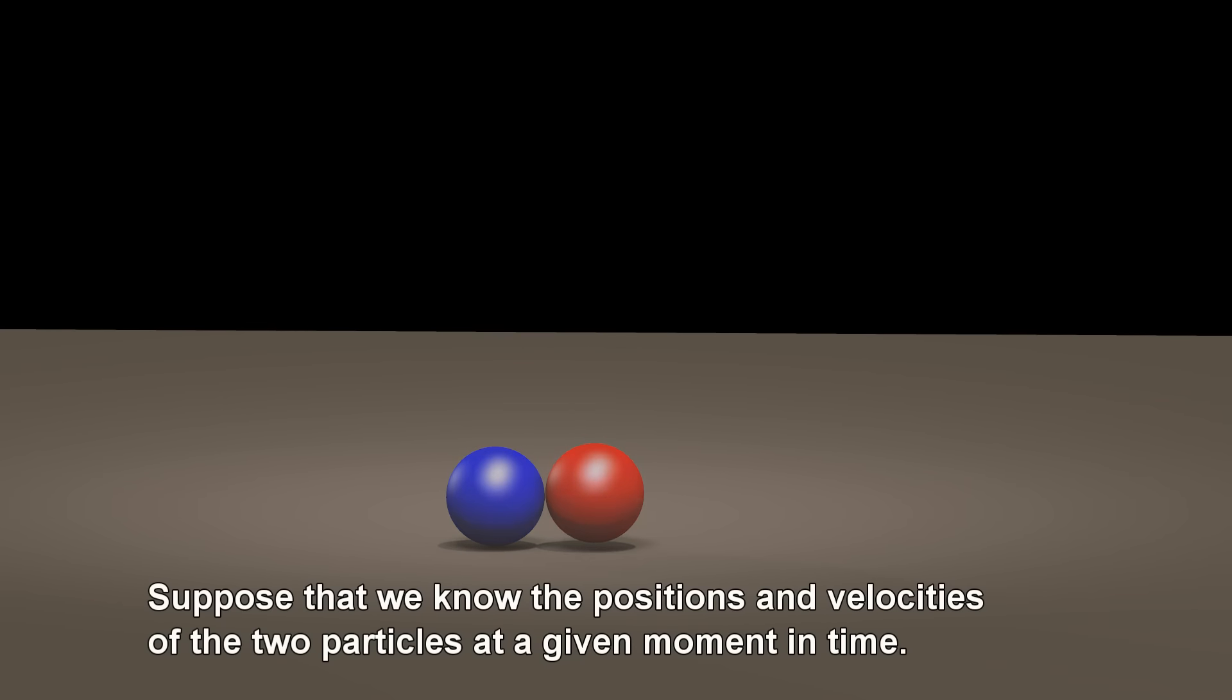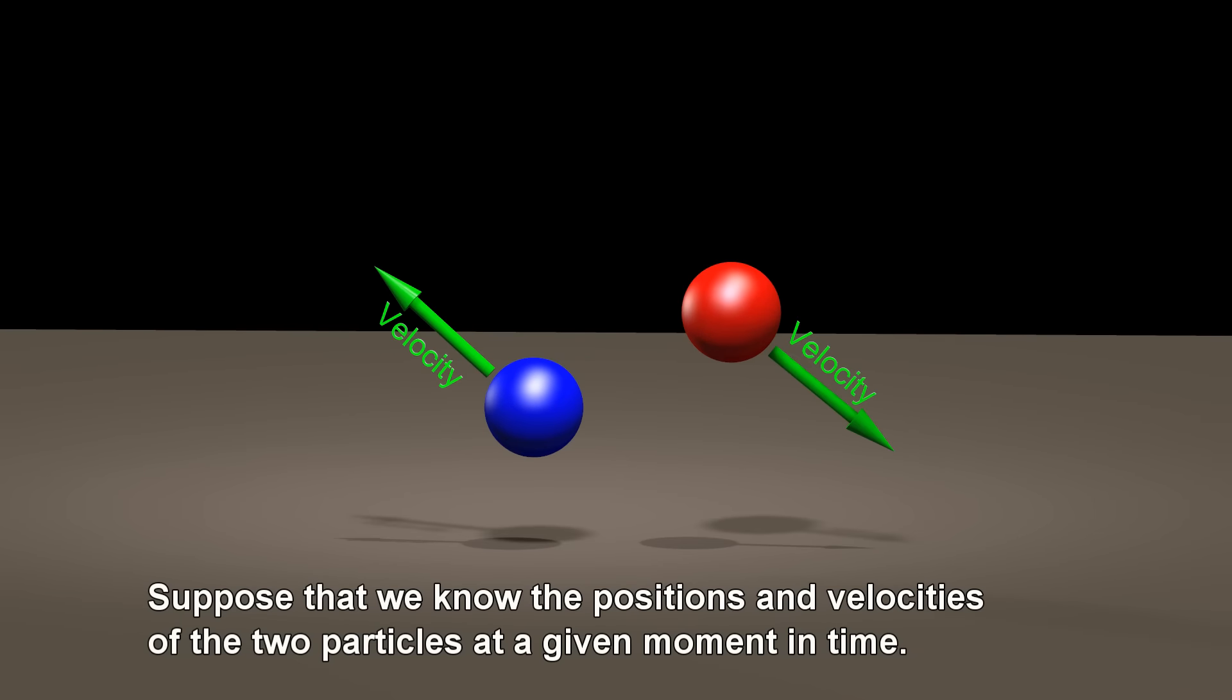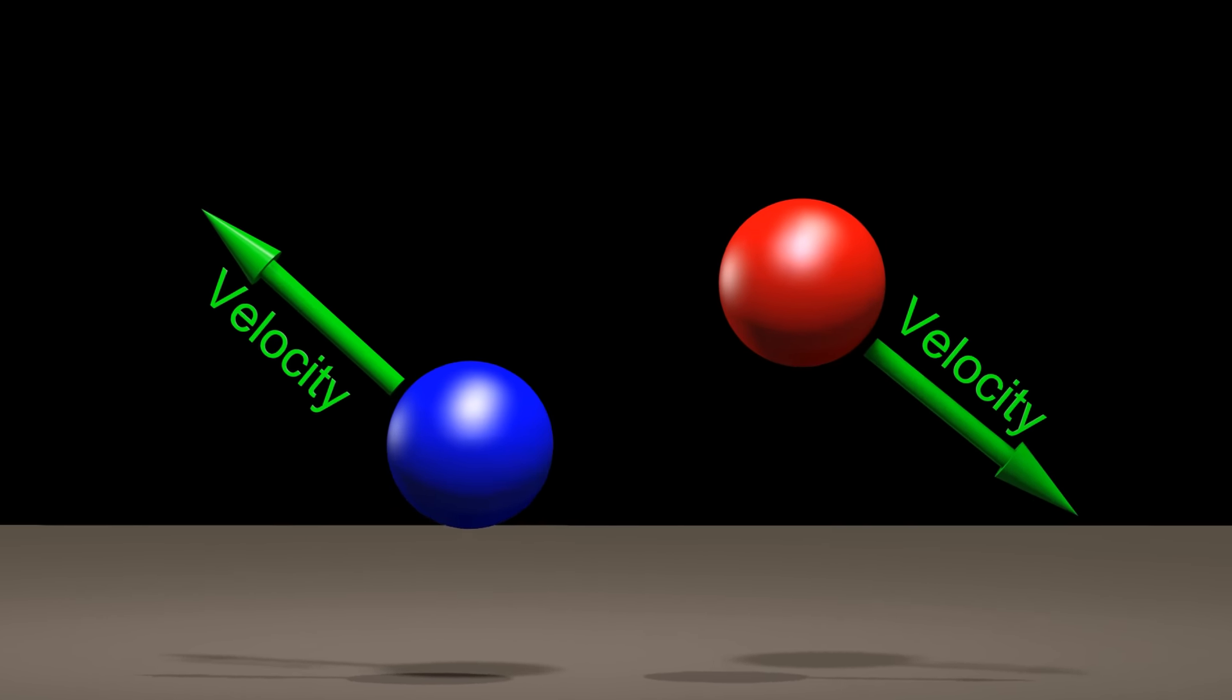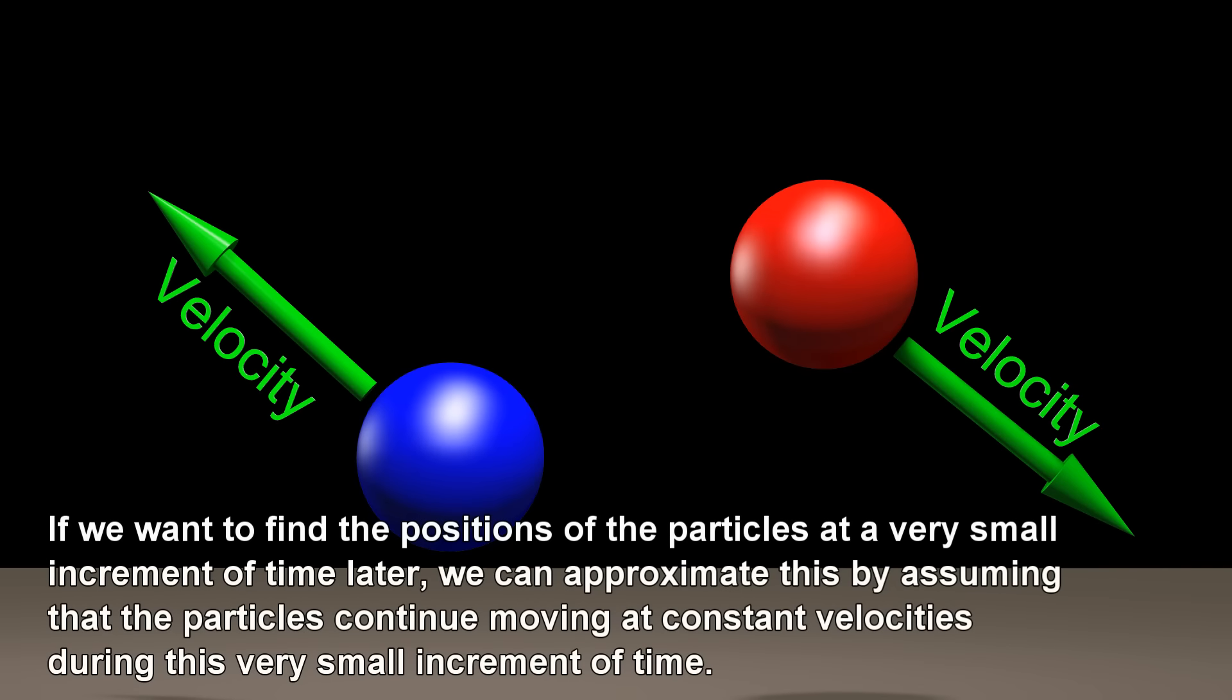Suppose that we know the positions and velocities of the two particles at a given moment in time. If we want to find the positions of the particles at a very small increment of time later, we can approximate this by assuming that the particles continue moving at constant velocities during this very small increment of time.